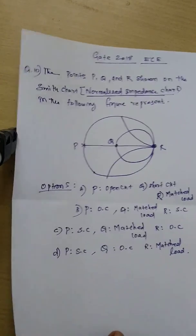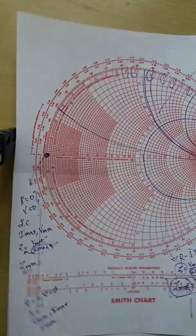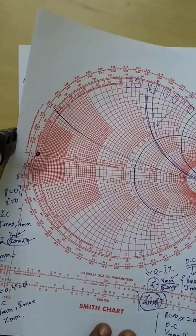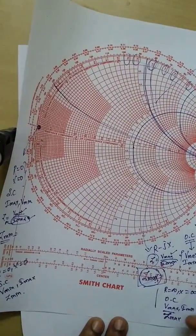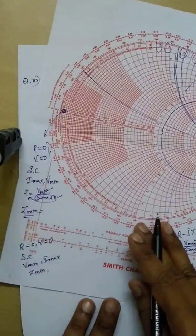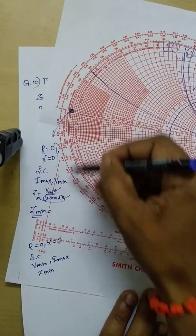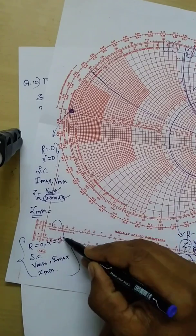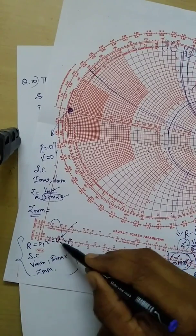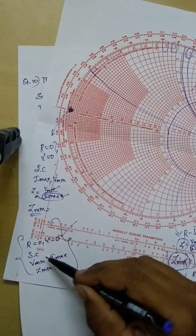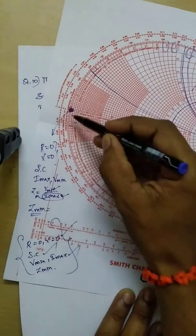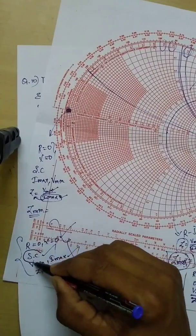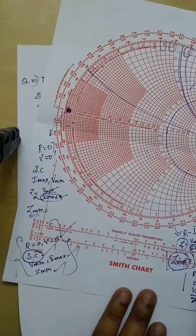If you had watched my lecture 1 video, you can easily answer this question, because in that video we defined some important points on the Smith chart. We derived that R equal to 0 and X equal to 0 gives this point, and this is the short circuit point — also the V-minimum, I-maximum, and Z-minimum point.